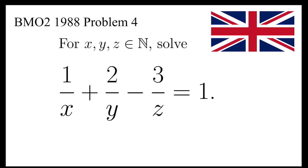For natural numbers x, y, and z, solve the equation 1 over x plus 2 over y minus 3 over z equals 1.